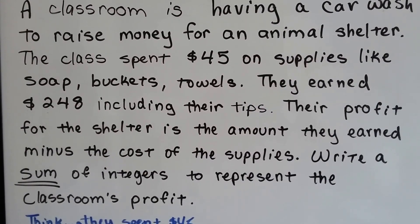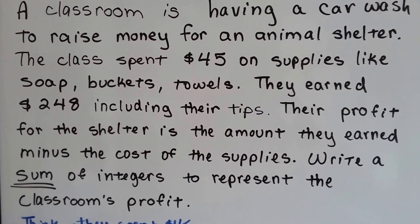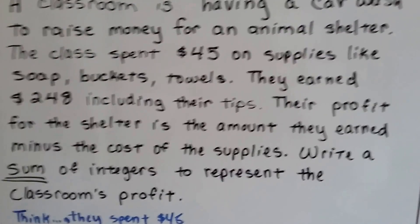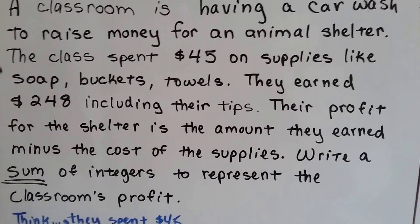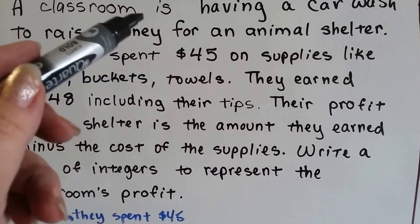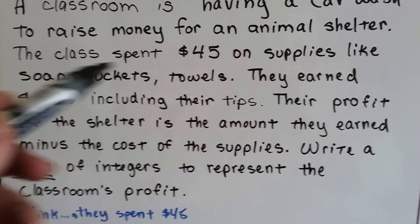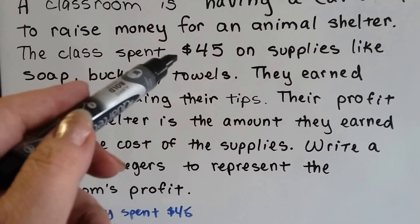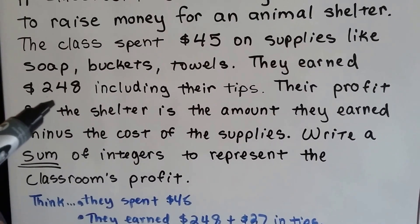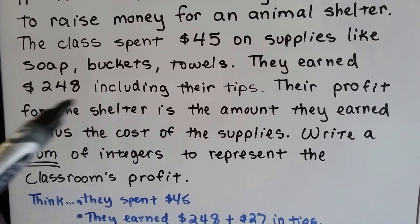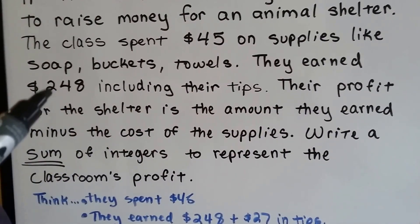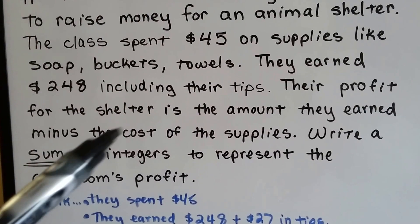We need to write a sum of integers to represent the classroom's profit. The first thing to notice is that they spent $45 on supplies before they even had the car wash, so they're minus $45 — they're $45 in the hole. Then they earned $248, including their tips, so the profit is the $248 earned minus the $45 in costs.